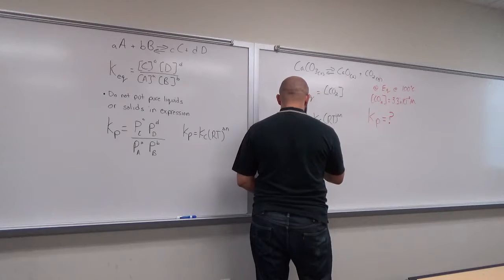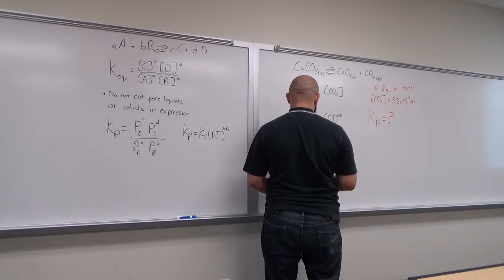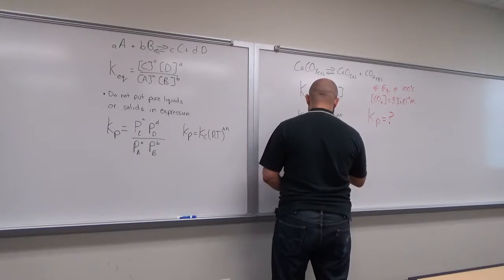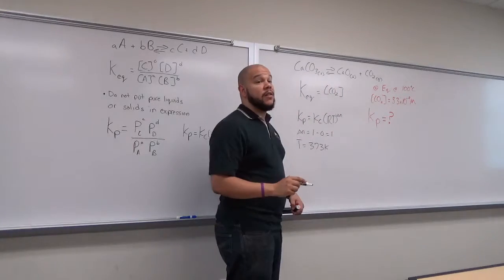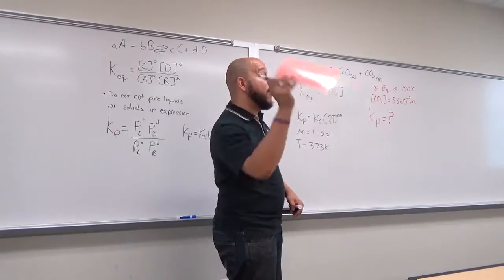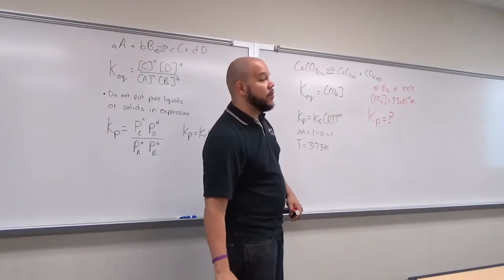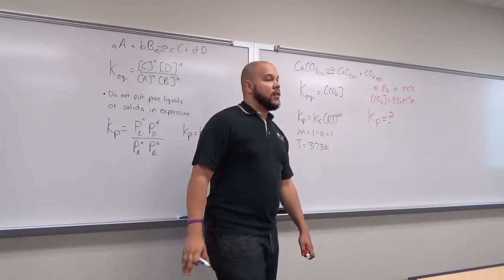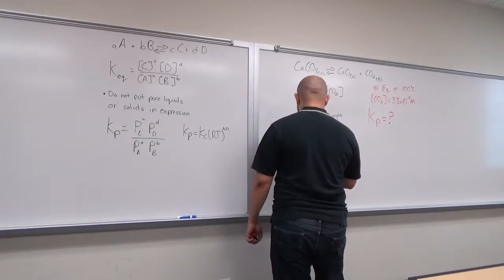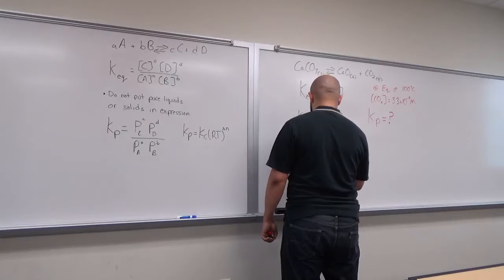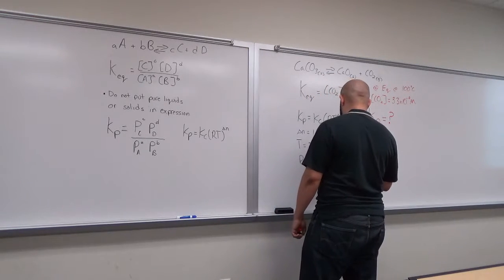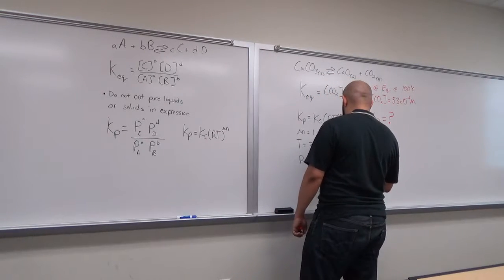Our T equals 373 K — because of our gas law, the R value has a temperature unit in Kelvin, which tells us why we should convert. Our R = 0.0821 L·atm·K⁻¹·mol⁻¹. We're picking that R because of the liter·atmosphere units — we're talking about gas.